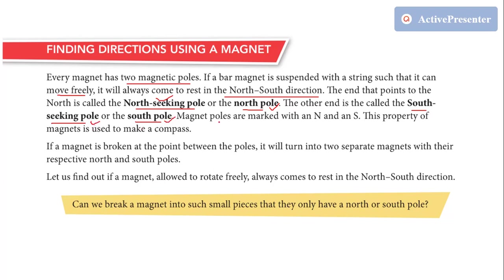So magnet poles are marked with N and S. N means north direction and S means south direction, or you can say N means north pole and S means south pole. So this property of magnet is used to make a compass. The bar magnet will always rest in earth's north and south direction. So this property is used to make a compass.